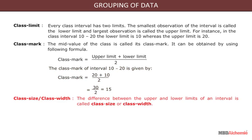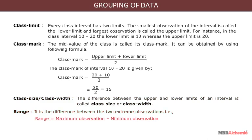Class size or class width: The difference between the upper and lower limits of an interval is called class size or class width. Range: It is the difference between the two extreme observations, that is, range is maximum observation minus minimum observation.